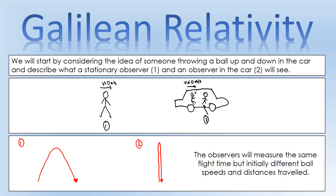What we're going to do is describe the paths the different observers will see the ball take. Observer one is stationary, so they'll see the ball follow a parabolic trajectory, because it has the up and down motion of the ball and also the horizontal motion of the car. Person two isn't going to notice the motion of the car because they're in it, so they're just going to see the ball go up and down.